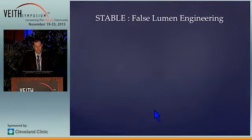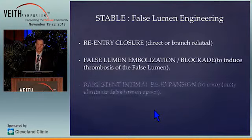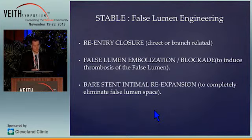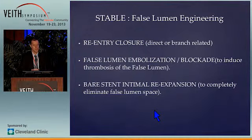STABLE engineers the false lumen, and the ancillary techniques used in this approach can be grouped into three areas: re-entry tear closure, false lumen embolisation or occlusion, and bare stent intimal re-expansion.